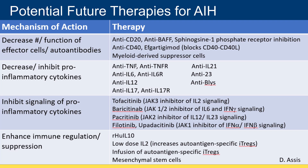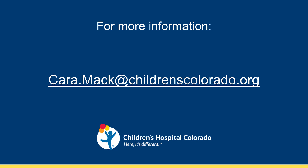The future for autoimmune hepatitis therapies is bright, and there are many therapies currently in research trials or being considered for future trials. Shown here are a list of potential therapies based on their mechanisms of action. These include therapies that decrease effector or pathologic T cells or B cells, therapies that decrease the proinflammatory cytokines damaging the liver or the signaling of these cytokines, and therapies that would enhance immune regulation and offer anti-inflammatory targets. Thank you for your attention, and if you have any additional questions, please feel free to reach out by email.